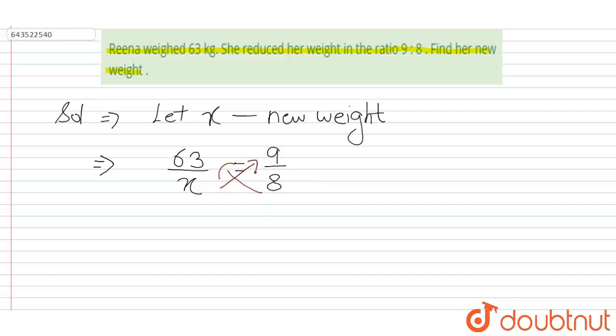This will be 63 into 8 is equals to 9 into x. To solve for x, we will take 9 in the denominator. 63 into 8 divide by 9 will be equal to x.